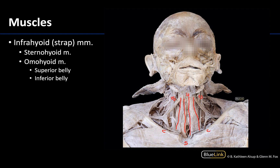The omohyoid is pretty distinct looking. It is lateral to the sternohyoid, but it consists of two bellies connected by an intermediate tendon, which you can see here. The superior belly connects the body of the hyoid to the intermediate tendon, which continues all the way to the upper border of the scapula — that's where the omohyoid gets its name from. This intermediate tendon is anchored to the clavicle via a fascial sling, which is a fairly pronounced one on this particular donor.